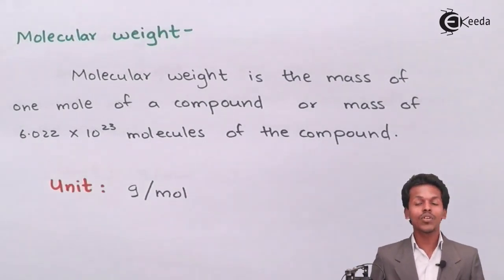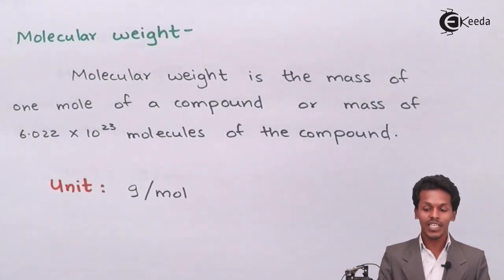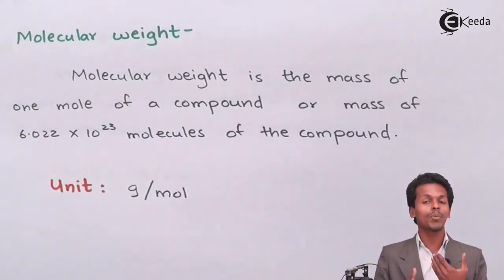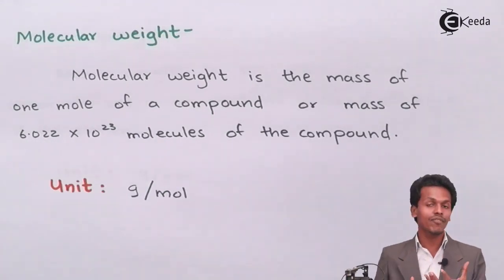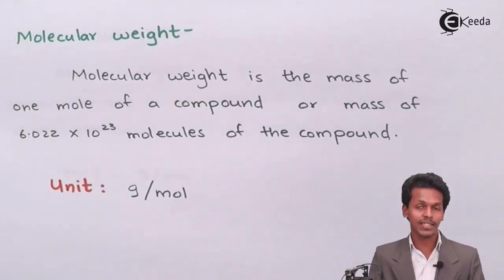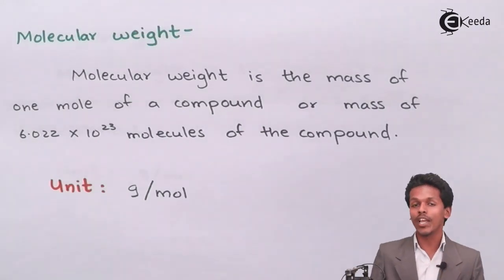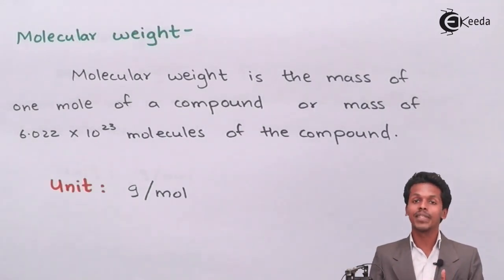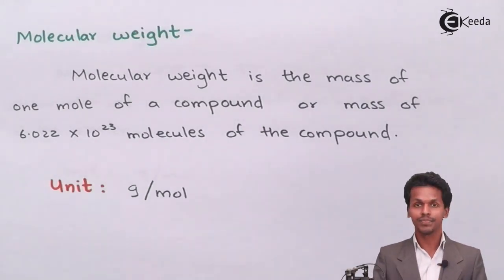So this was all related to the number of moles. If we know the atomic weight or the molecular weight, and if we know the mass of a particular compound or substance, it would be very easy to calculate the number of moles of that substance.